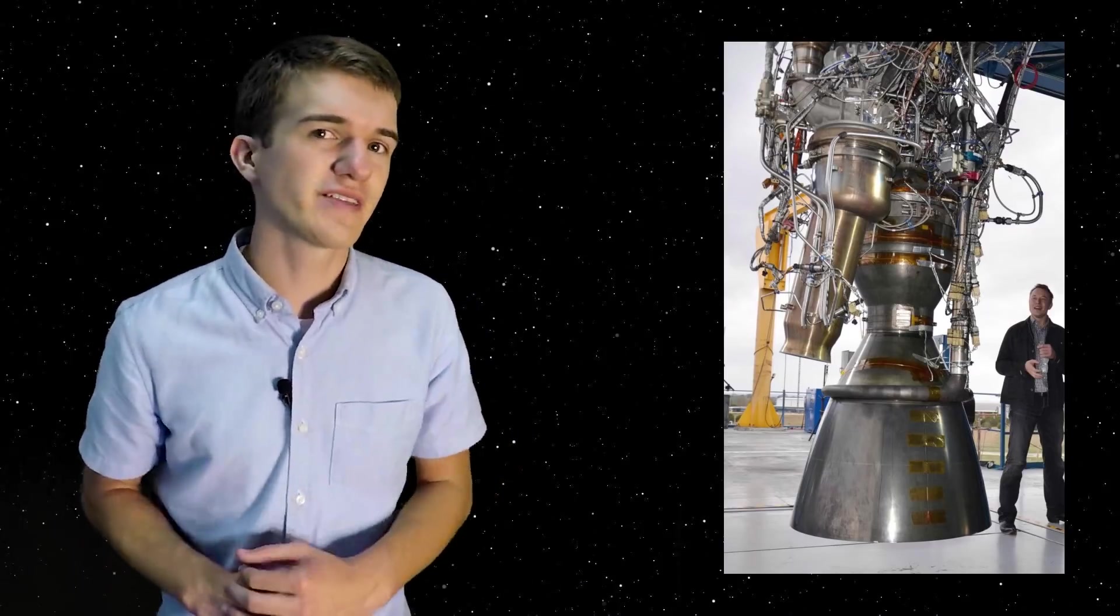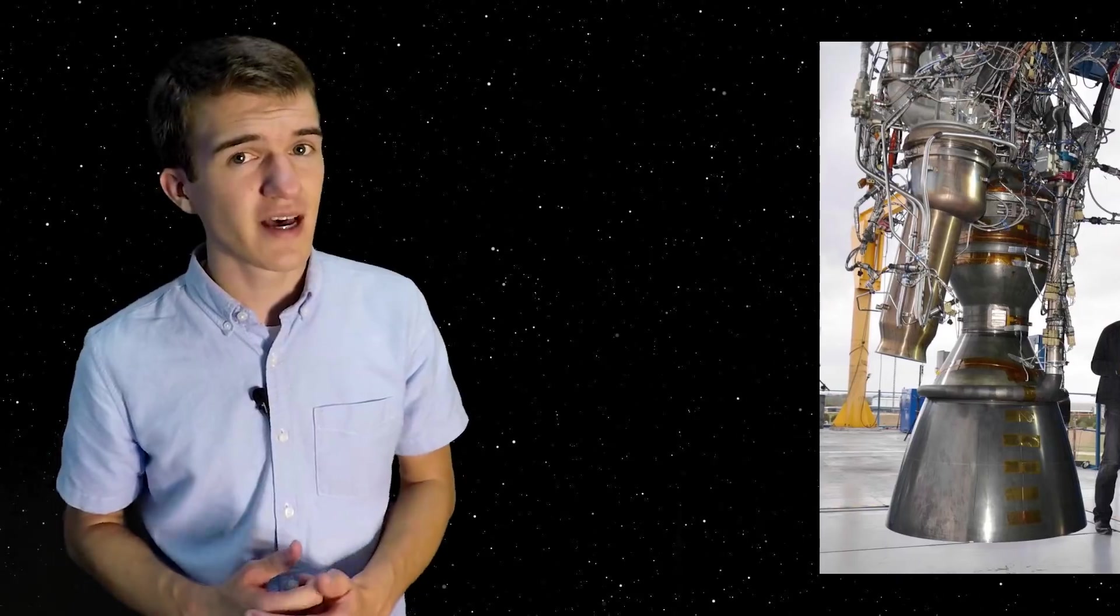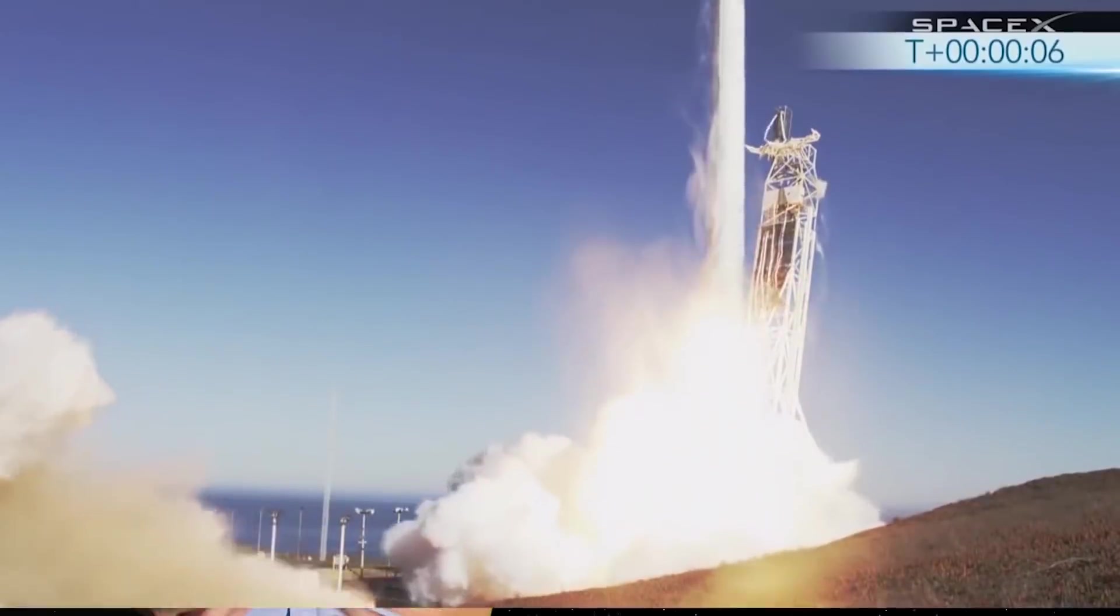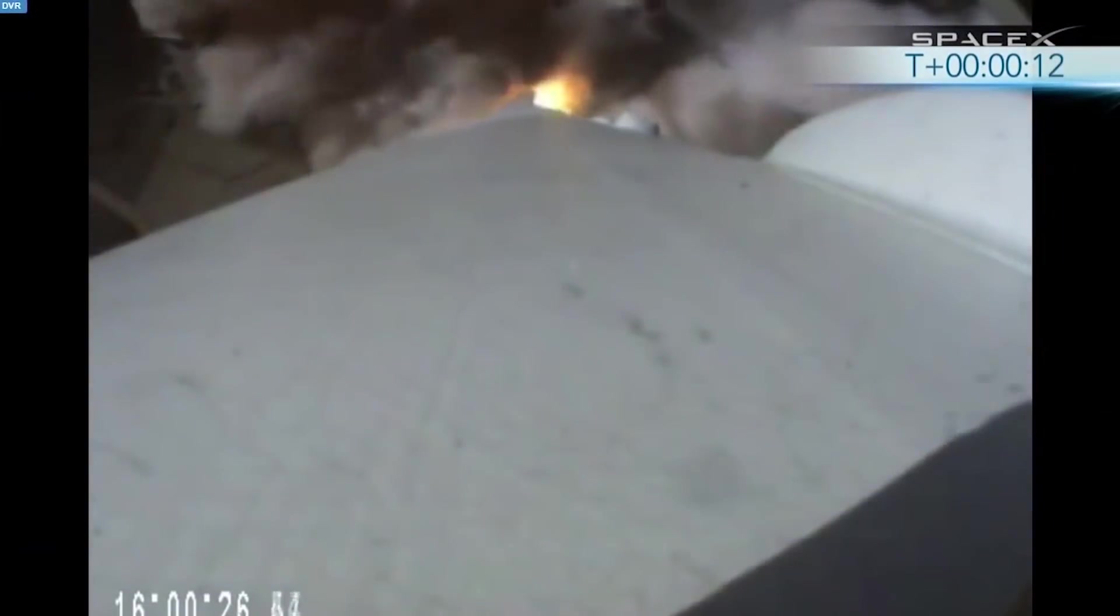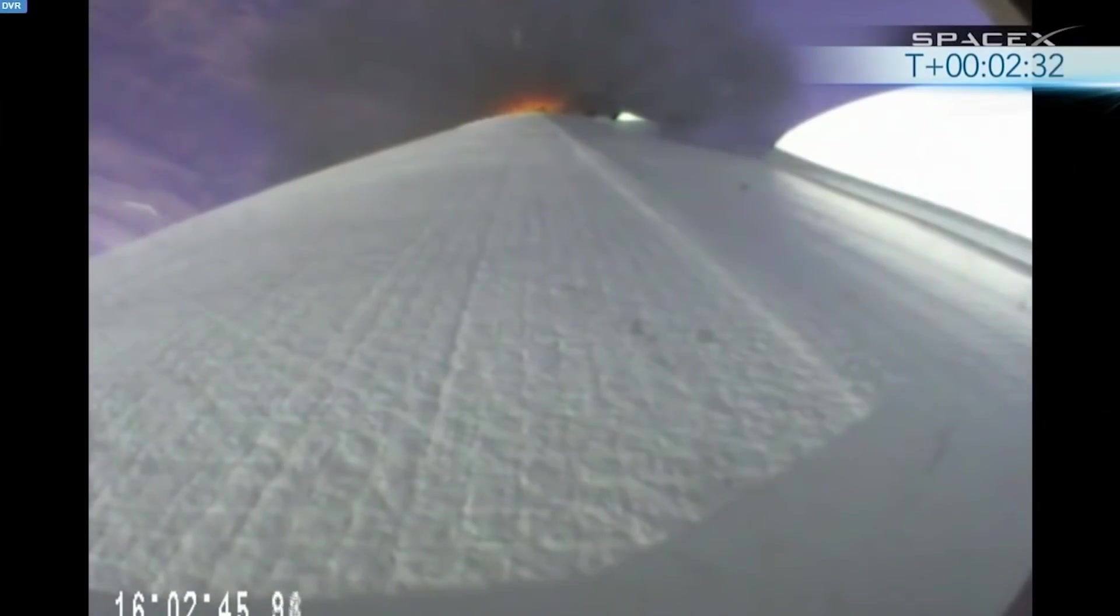Now, the launch would also try and test their landing capabilities. Not necessarily on a barge or on land, but just to see how well they could slow themselves down to try and get onto the ocean, and maybe even save it if it landed successfully. Now what ended up happening was the launch was successful, it got the payload into orbit, however, during its descent it experienced a much higher rolling motion than they originally expected, and therefore weren't able to successfully recover the booster.